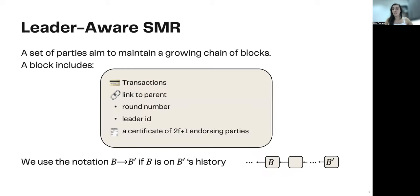We start by formalizing the problem we are solving, which we call leader-aware state machine replication. We are going to focus on the eventual synchrony model, with the resilience of n equals 3f plus 1. In this problem, a set of parties aim to maintain a growing chain of blocks. A block includes transactions, a link to the parent block, round number, leader ID of the block, and a certificate of 2f plus 1 endorsing parties. This is what you all probably know as a quorum certificate, a quorum of votes with digital signatures on a block. We use the notation b prime extends b, if b is on b prime's history, meaning that you can traverse on the parents from b prime and reach b.